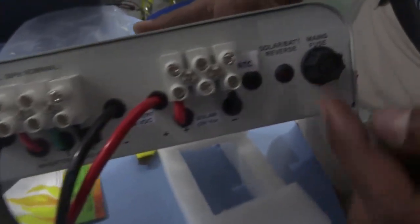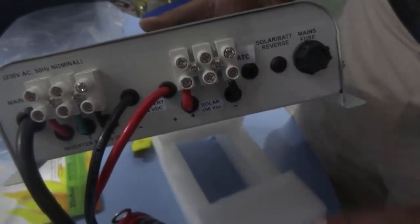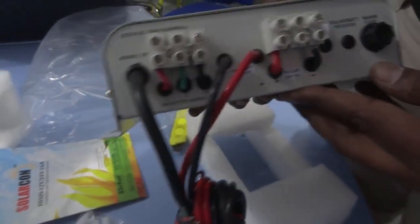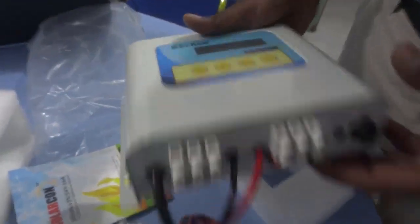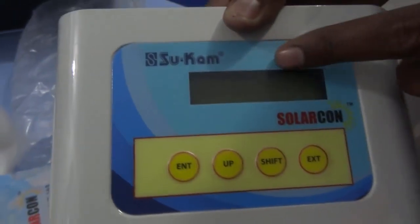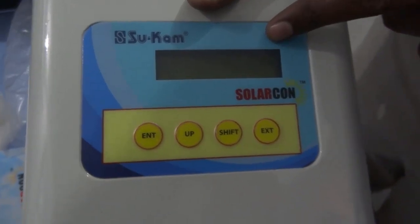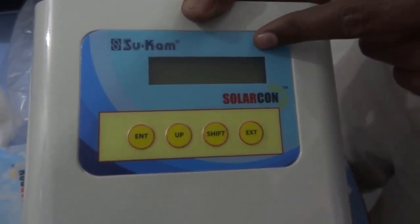...we would recommend 700 to 800 watts of solar panels. So it's a very good device. Yes, LCD display and DIP switches...